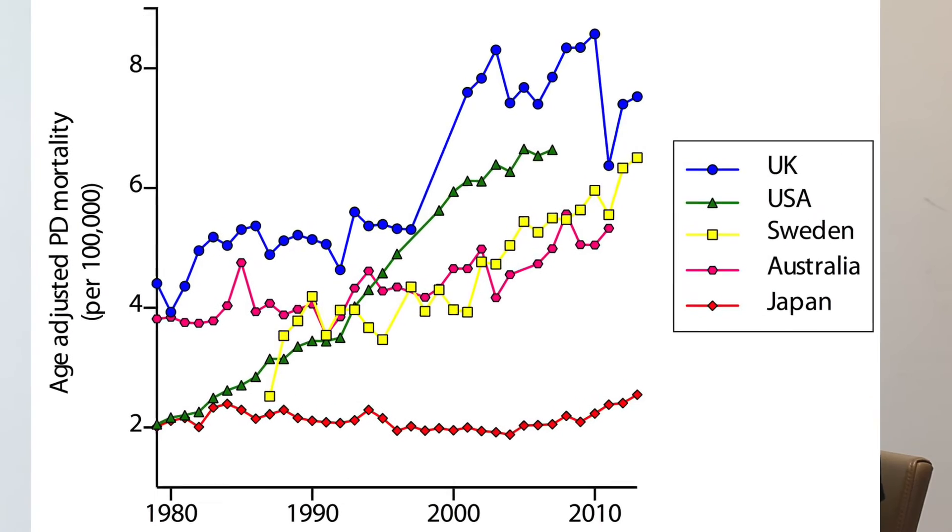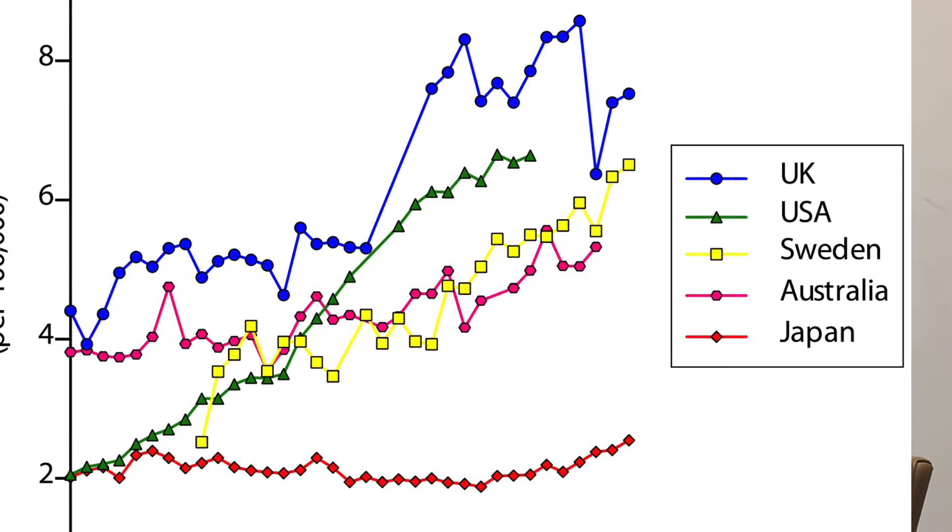The one exception is Japan, where the mortality rate has stayed pretty much the same. Yet in a range of other countries, where kids are not anemic yet are fed lots of iron, rates seem to keep going up.